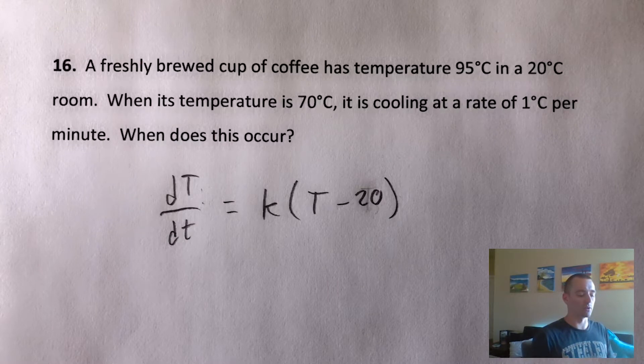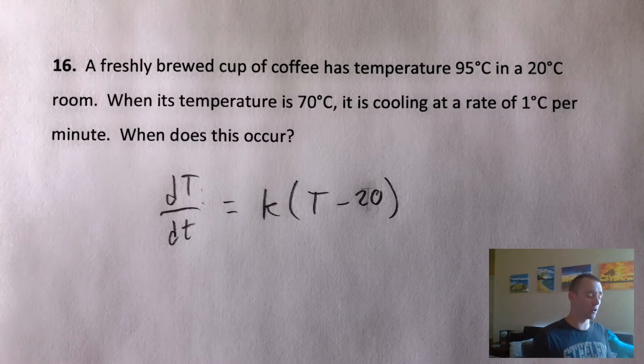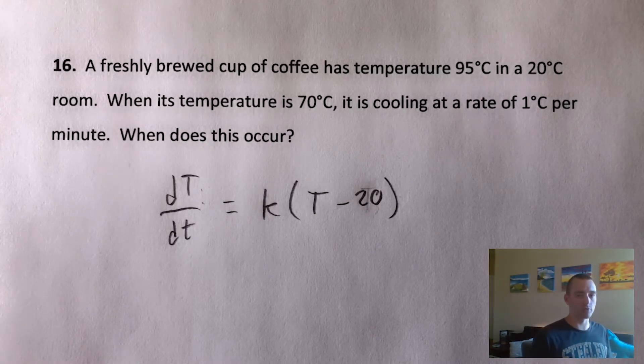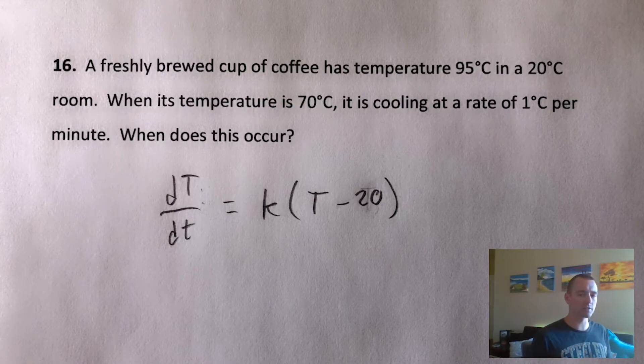Its temperature is decreasing one degree per minute when the temperature is 70 degrees. So what we can do is use this differential equation to solve for K, rather than the typical process of coming up with an equation for the temperature or some other variable that we relate to the temperature and then solving for K that way.